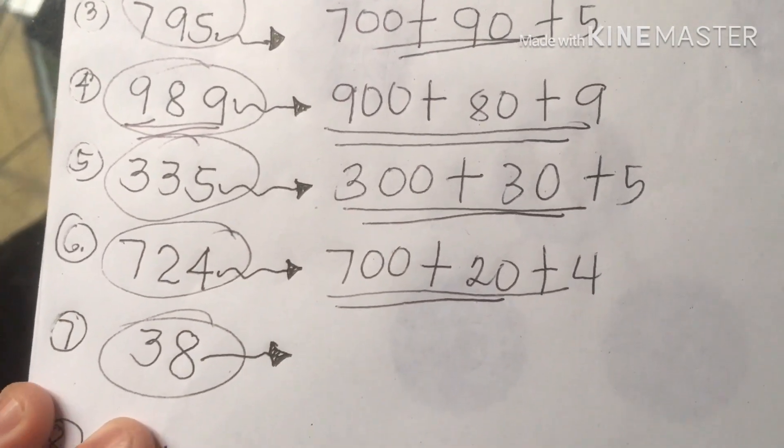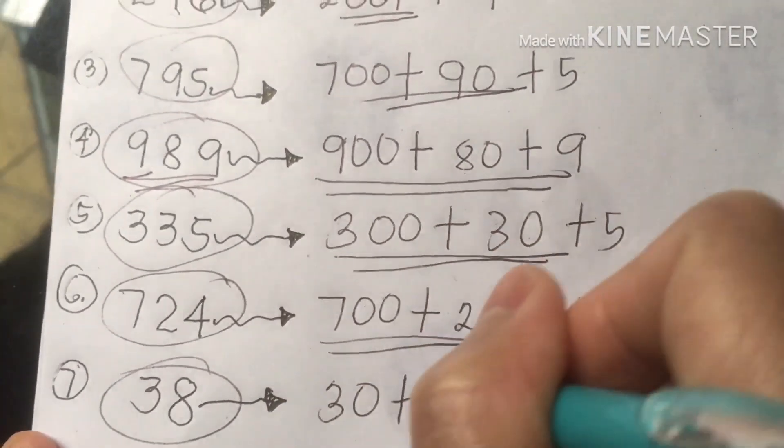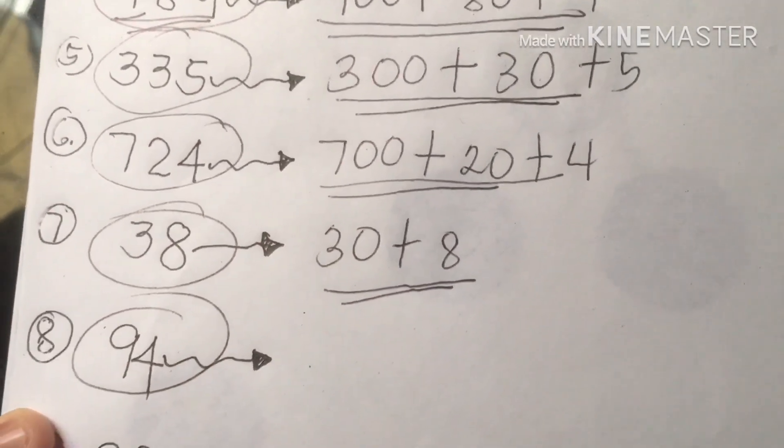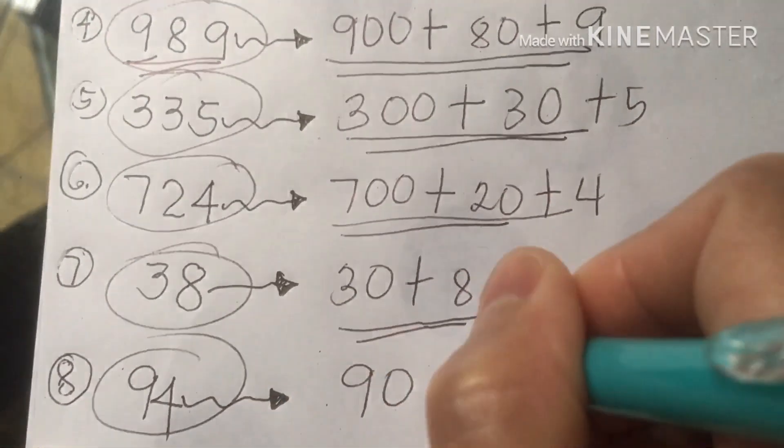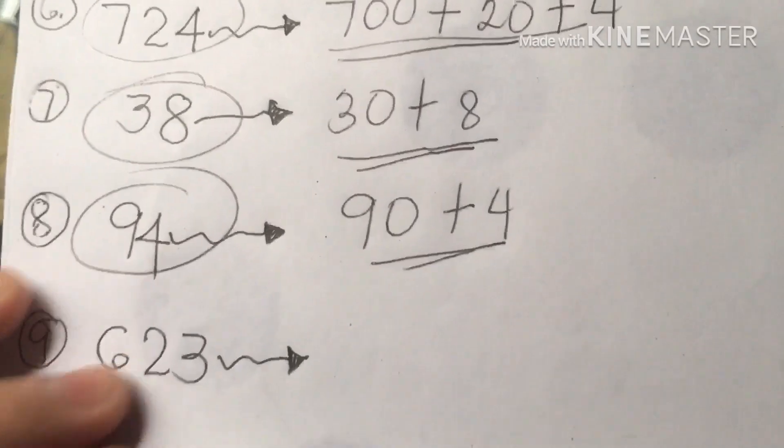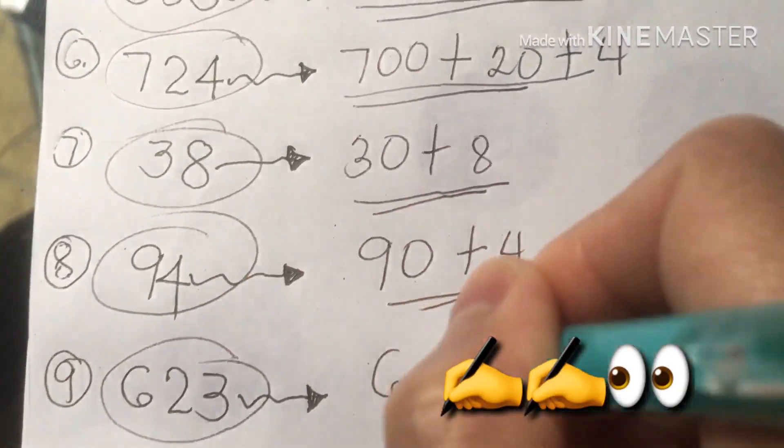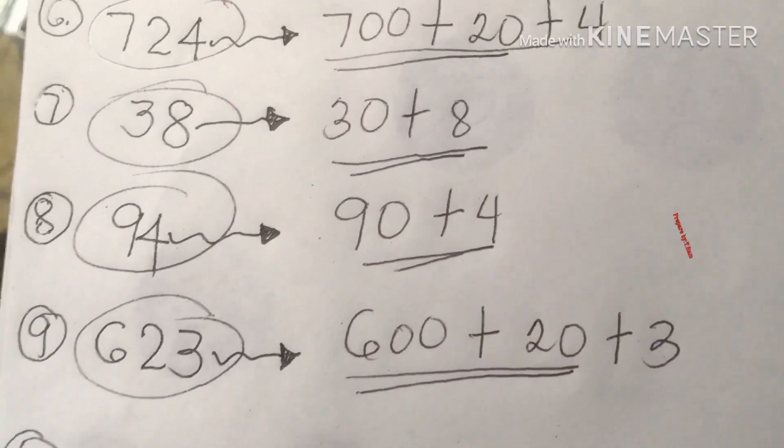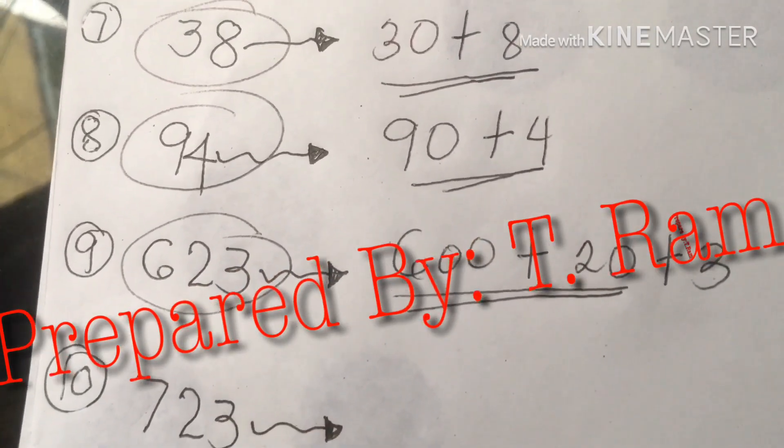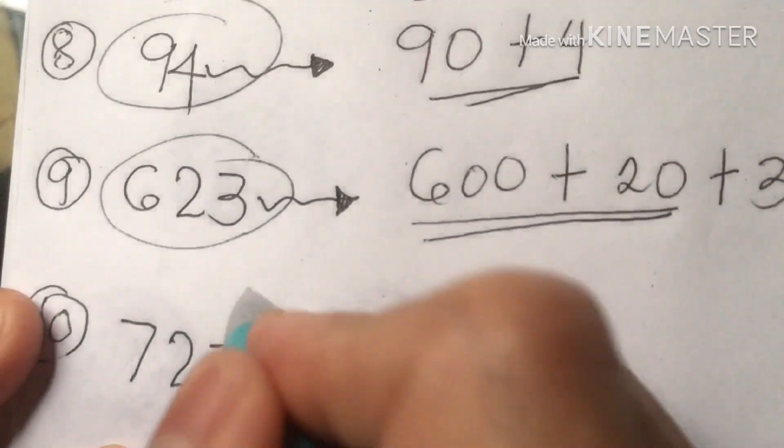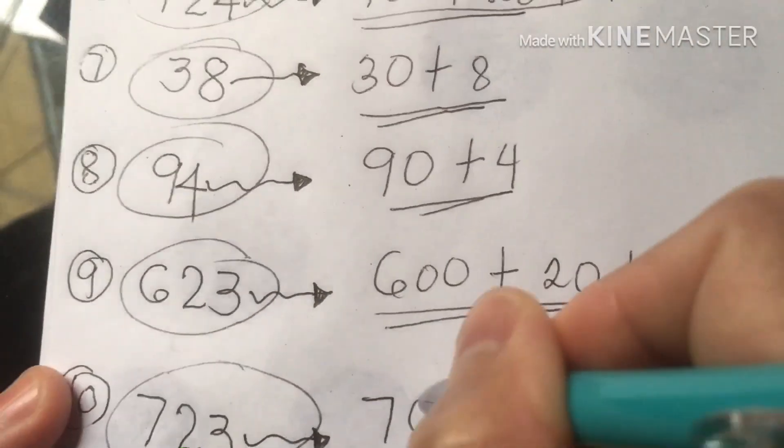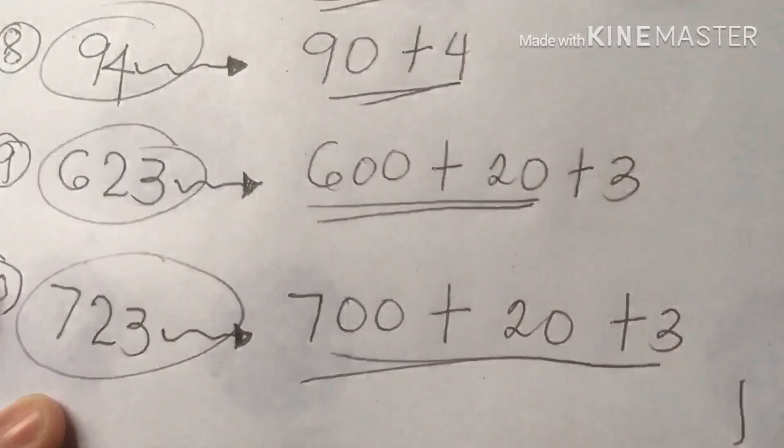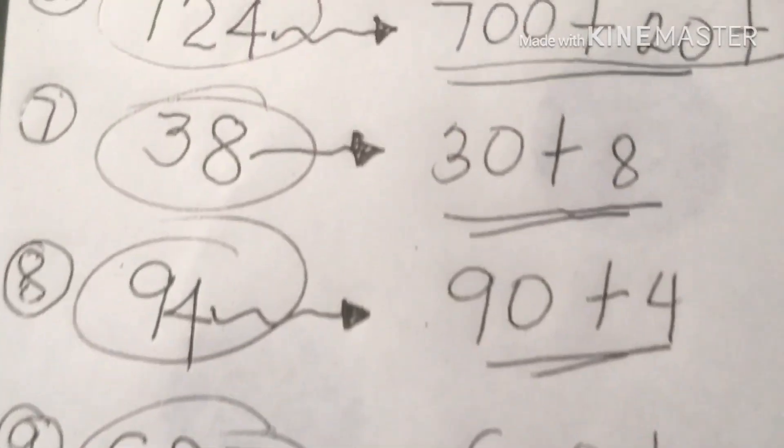Next, 38. We have tens, 30 plus 8. This is the right answer for 38. Next, 94: we have 90 plus 4. 623: 600 plus 20 plus 3. That is our decomposing number, about 623. And the last, but not the last, we have 723: 700 plus 20 plus 3. That is how you are going to decompose 723.